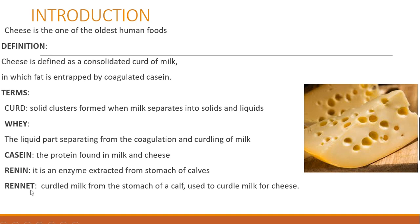The difference between renin and rennet: rennet is the curdled milk from the stomach of a calf, whereas renin is the enzyme essential for the curdling of milk. The curd is the solid cluster formed when milk separates into solids and liquids, whereas whey is the liquid part that separates from the coagulation and curdling of milk.